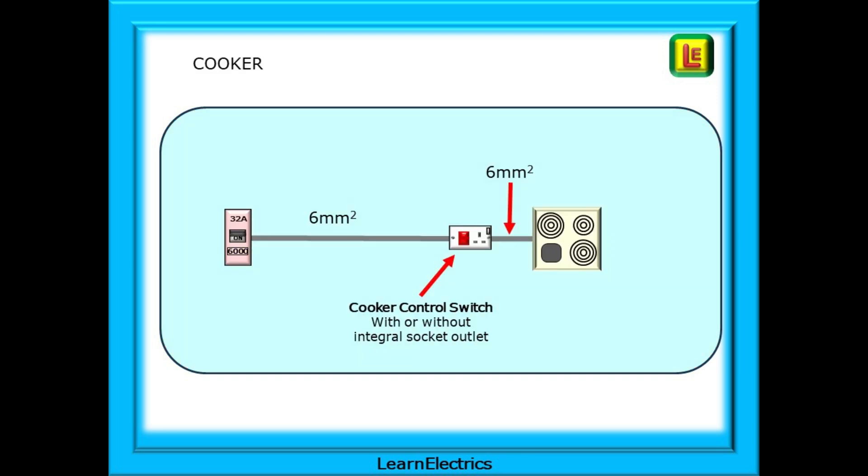The cooker next. The cooker will consume around 30A at full load, not allowing for diversity. So the 32A breaker is more than adequate. Good practice and building regulations recommendations tell us that a 6mm twin-in-earth cable should be used for a 7kW cooker. The circuit should be a dedicated cooker circuit, just for the cooker. A cooker control switch should be installed, which can be cooker only, or have an integrated 13A socket outlet built into it.